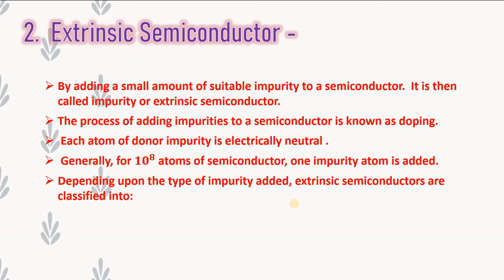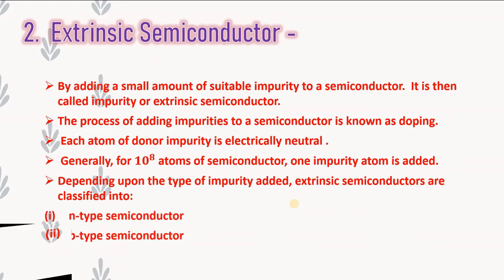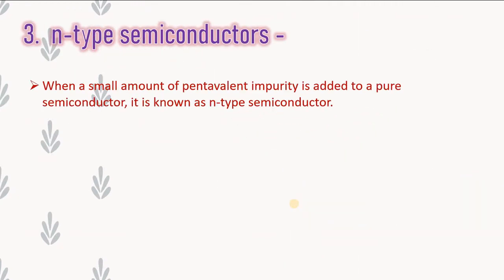Depending upon the type of impurity added, extrinsic semiconductors are classified into two types: n-type semiconductor and p-type semiconductor. When a small amount of pentavalent impurity is added to a pure semiconductor, it is known as an n-type semiconductor. Penta means five and valent means valence electrons — the atom having five valence electrons is called a pentavalent atom. So when pentavalent impurity is added to a pure semiconductor, an n-type semiconductor is formed.